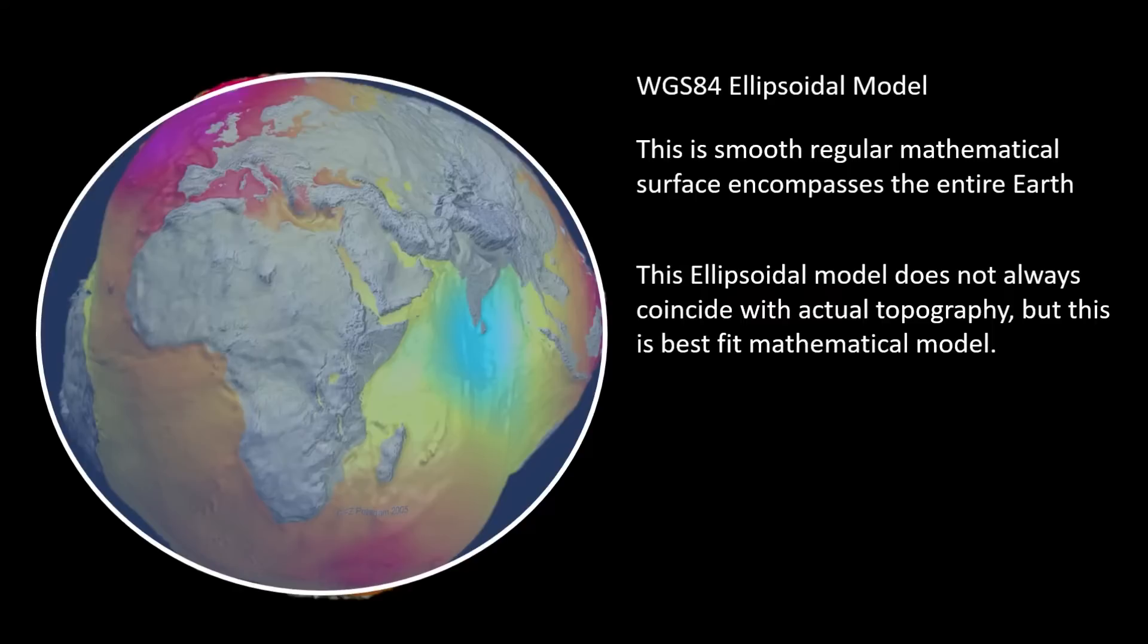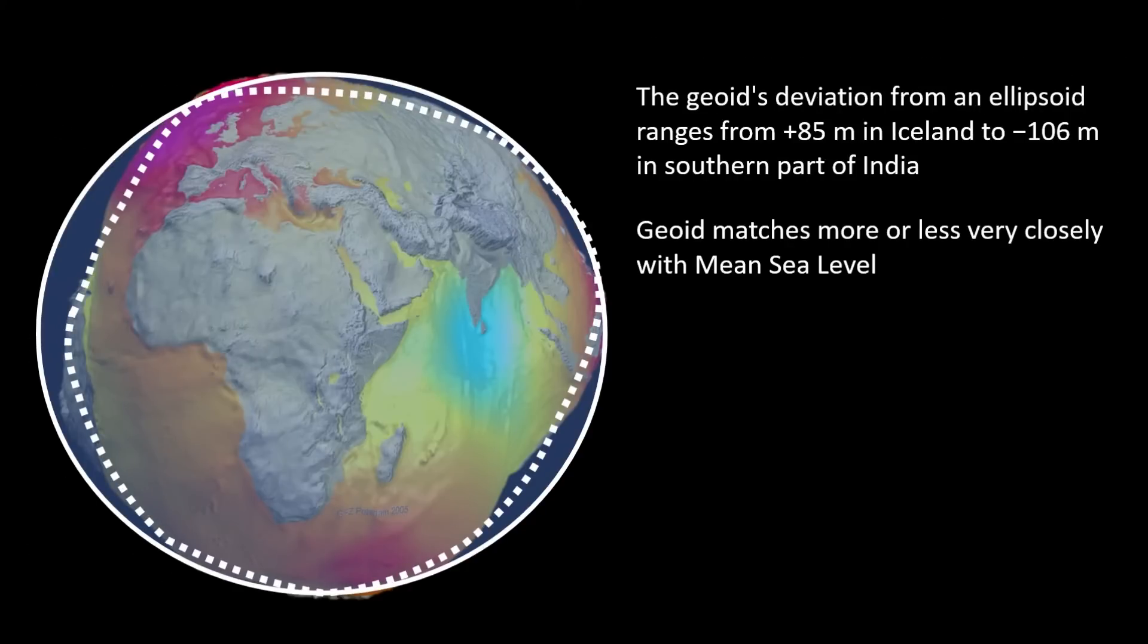The geoid's deviation from an ellipsoid ranges from plus 85 meters in Iceland to minus 106 meters in southern part of India. The geoid matches more or less very closely with the mean sea level.